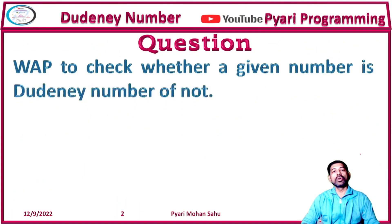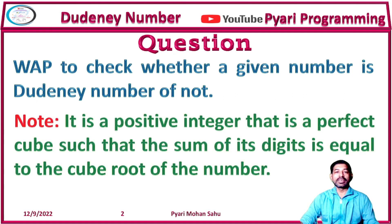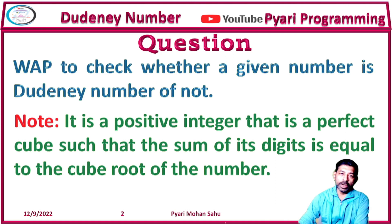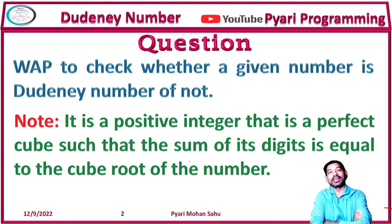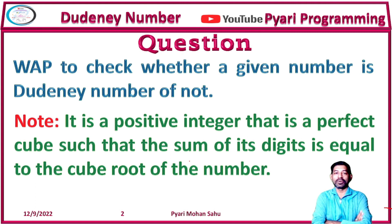Let's see how the question is framed: 'Write a program to check whether a given number is a Dudani number or not.' To check this, first it says that it must be a positive integer — we know how to find whether a number is positive. Next, it must be a perfect cube. A video on how to check for a perfect cube is already available in your playlist under 'Number System'. Then, if it is a perfect cube, we check the sum of its digits.